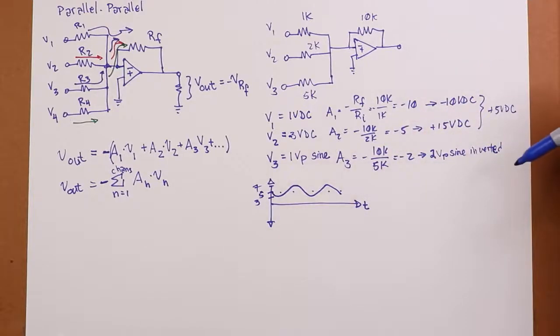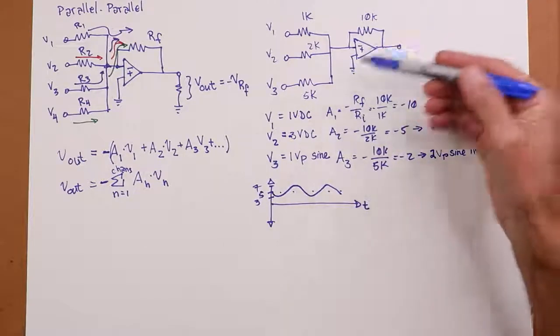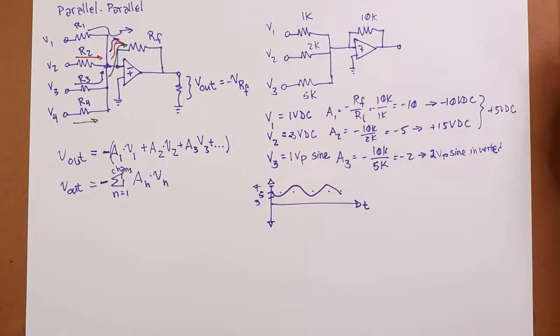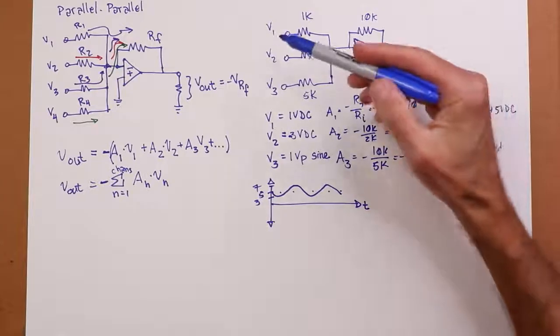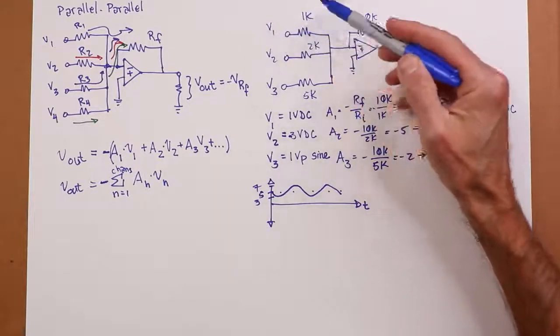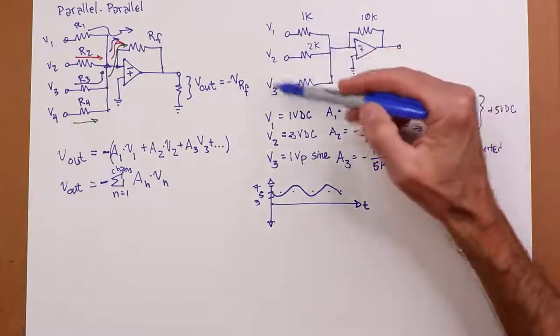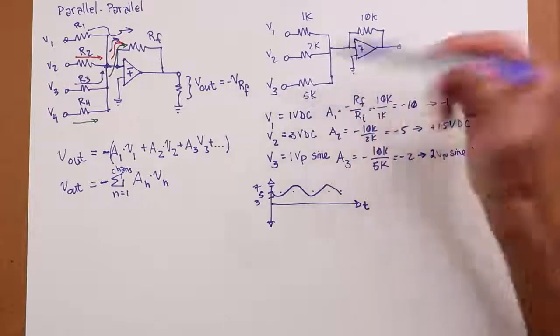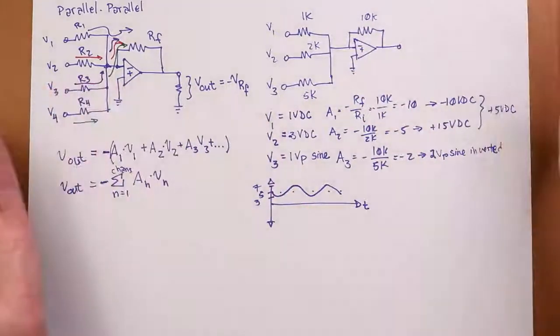Here's a question for you. What's the input impedance of this amplifier? Well, it's a trick question. Because there is no singular input impedance. There's three inputs. Each one has its own input impedance. The input impedance for channel 1 is 1k. The input impedance for channel 2 is 2k. The input impedance for channel 3 is 5k. Trick question.